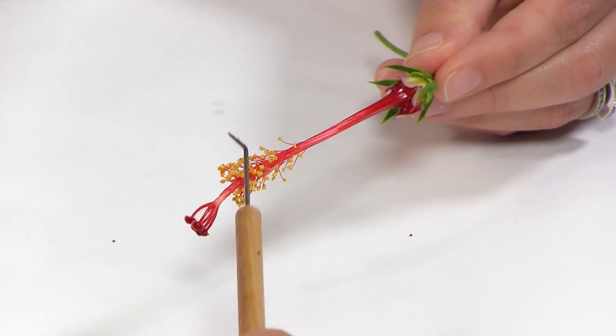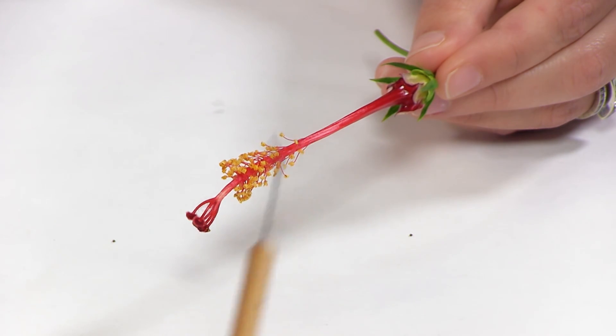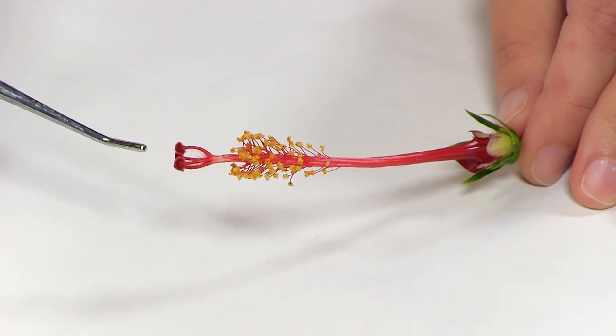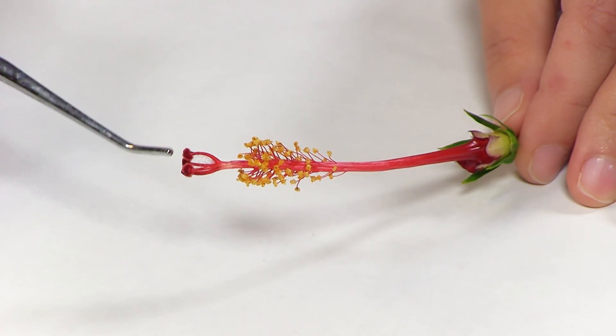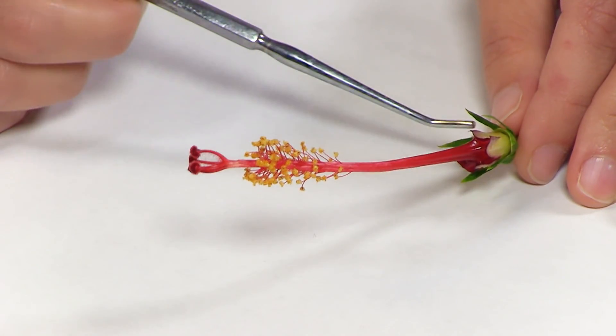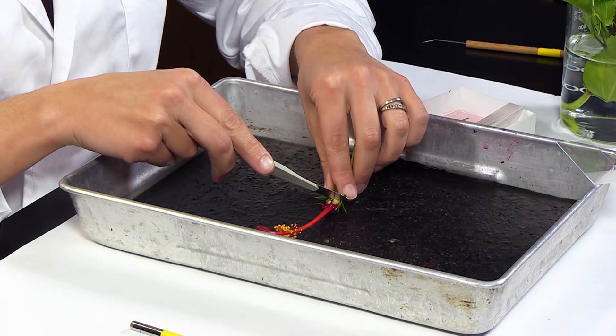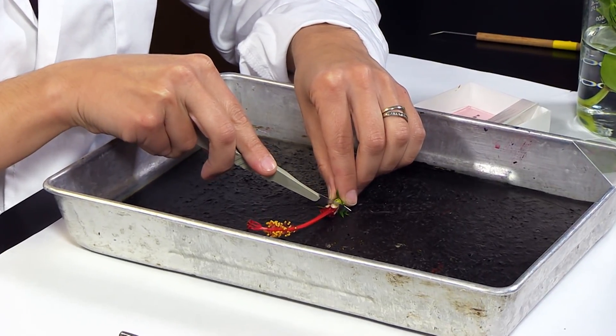Notice the male part of the flower, the stamen. It includes the anther and filament. Observe the female part of the flower, the carpel. The carpel consists of the stigma, style, and ovary.